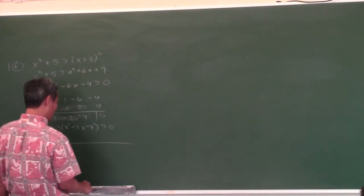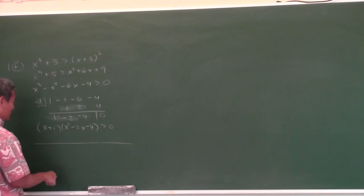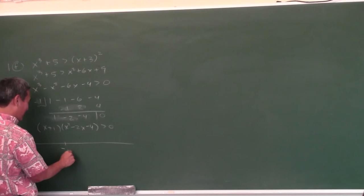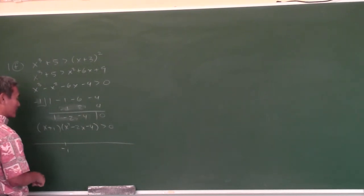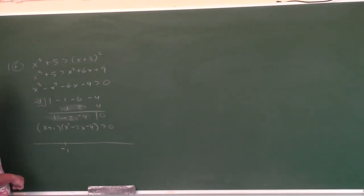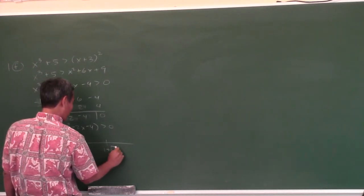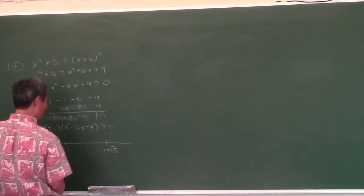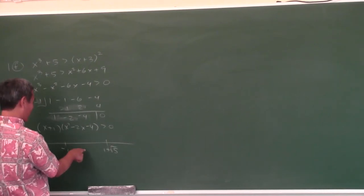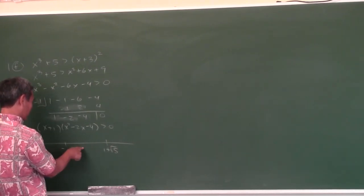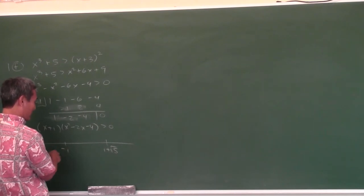So what are the zeros of this? Negative 1. And what about from the quadratic? 1 plus or minus root 5, using the quadratic formula. So 1 plus root 5. And 1 minus root 5 — where would that be? You have to put them in order. Root 5 is 2 point something, so 1 minus 2 point something is negative — it goes over here: 1 minus root 5.